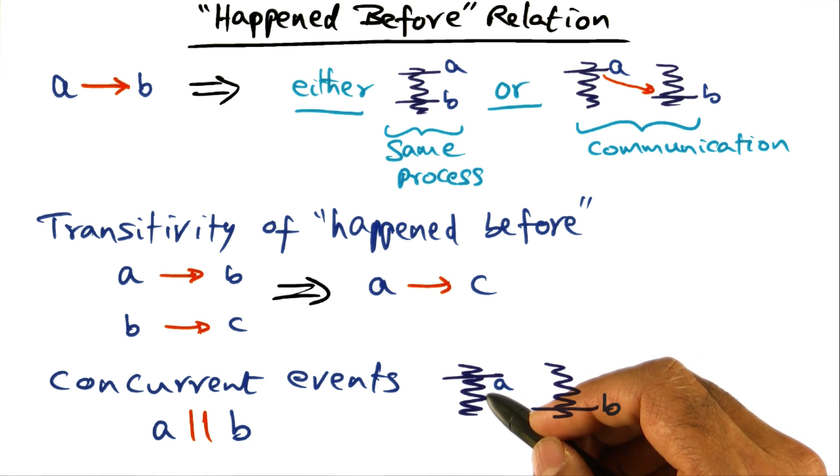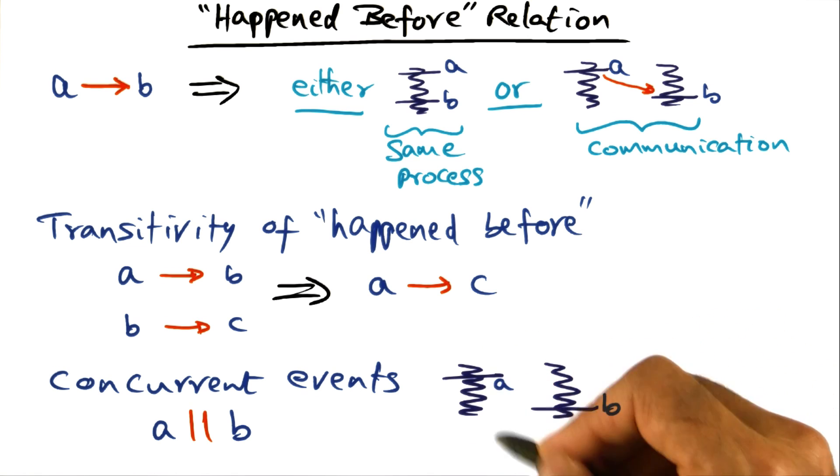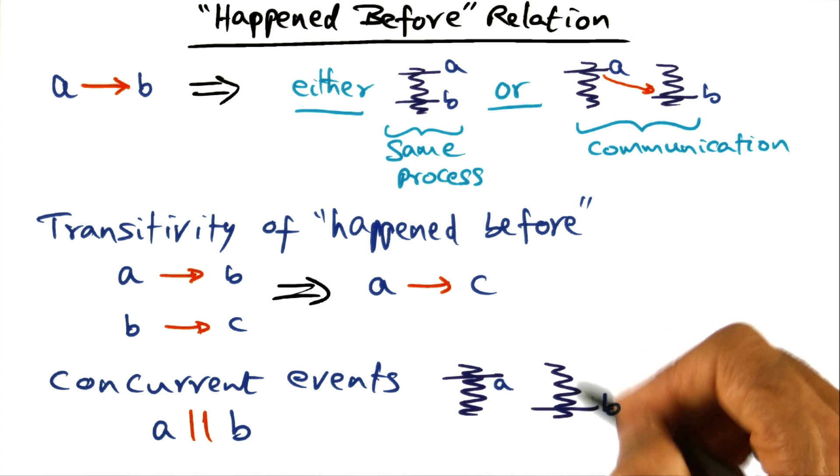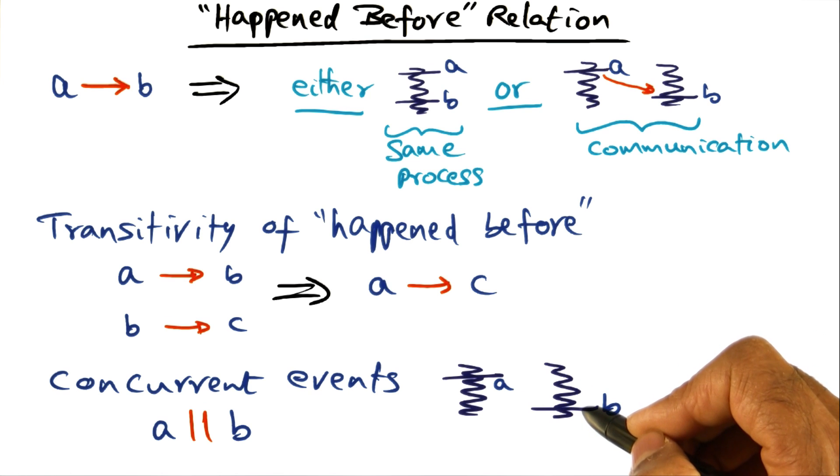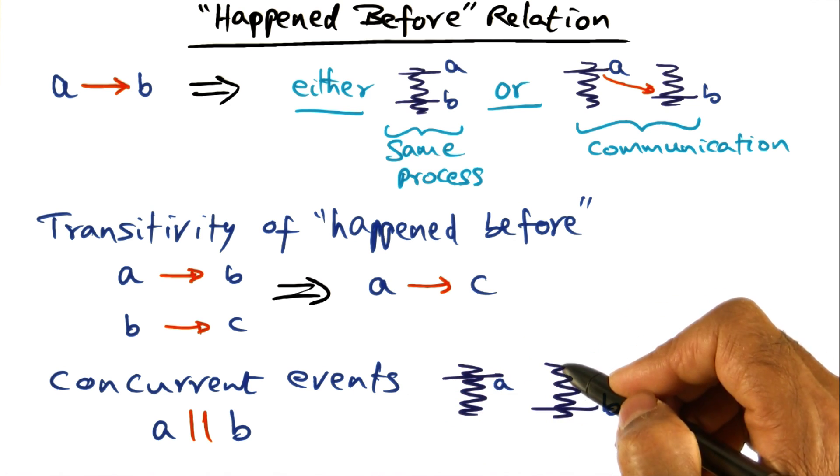That's the nature of the game, that these processors are executing asynchronously with respect to one another. And therefore the event that is happening over here, if I want to look at wall clock time and one execution of the distributed program, it's possible that A in real time happened before B. But the same program when I execute it again, the second time around, it could be that this event B happened before A. And therefore, these two events are called concurrent events.